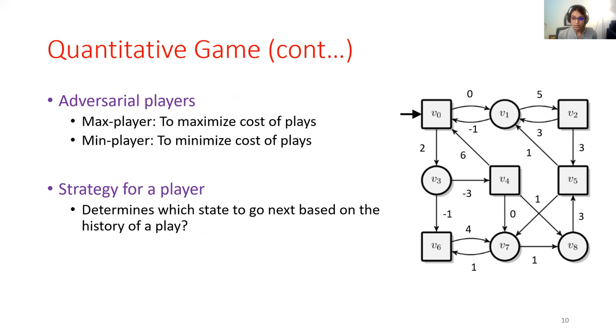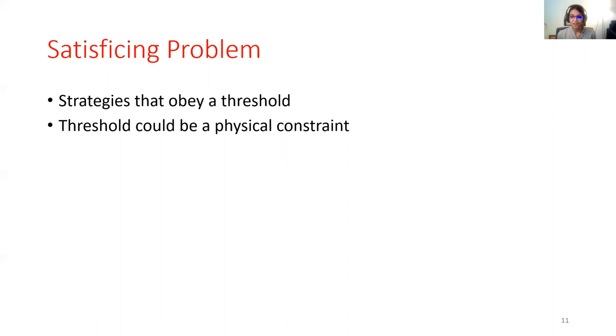Now, finally, I can tell you what the title of this paper means. I'll define the satisficing problem in quantitative games. In our definition of satisficing, to capture the idea of good enough, we use threshold bounds. And the idea is that the agents should obey this threshold bound.